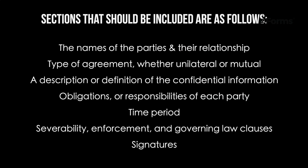Now, what should the agreement include? At a minimum, sections that should be included are as follows: the names of the parties and their relationship, type of agreement — whether unilateral or mutual — a description or definition of the confidential information, obligations or responsibilities of each party, time period, severability, enforcement and governing law clauses, and signatures.